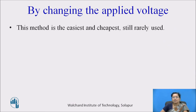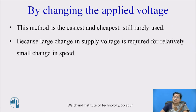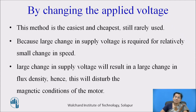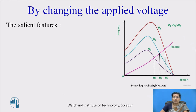Let us discuss about this method. This method is the easiest and cheapest, still rarely used because a large change in supply voltage is required for a relatively small change in speed. A large change in supply voltage will result in large change in flux density, hence this will disturb the magnetic condition of the motor. And if the motor goes into saturation, that will affect the working of the motor. The graph indicates the torque and voltage relation — as we change the voltage, the maximum torque also changes. You can see V1 is greater than V2 is greater than V3, and the maximum torque also increases with increase in voltage.